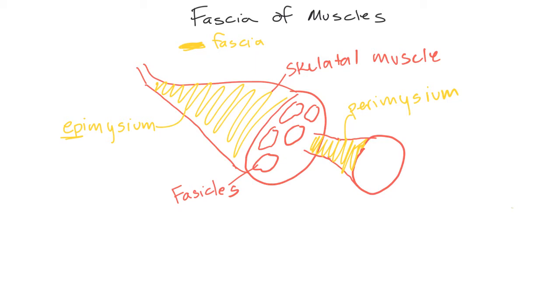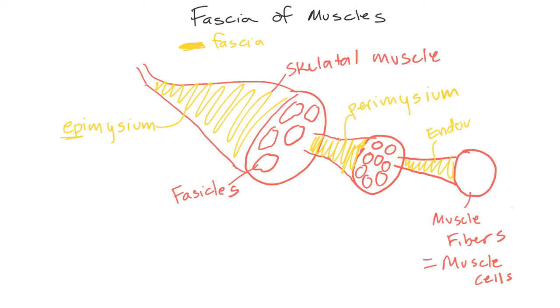Where the muscle is then sectioned into what are called fascicles. Okay, I'm going to draw one of these fascicles out here. Okay, but surrounding each fascicle then is another layer of fascia, the perimysium. Okay, but this is kind of like those Russian dolls.